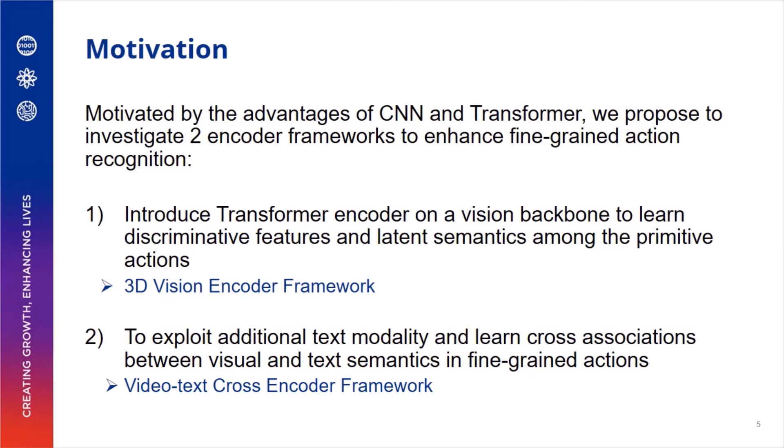The first framework introduces a Transformer Encoder on a vision backbone to learn discriminative features and latent semantics among the primitive actions, which we call a 3D Vision Encoder framework. The second framework aims to exploit additional text modality and learn cross-associations between visual and text semantics in fine-grained actions, which is called a Video Text Cross-Encoder framework.